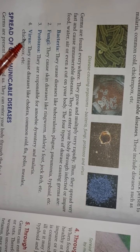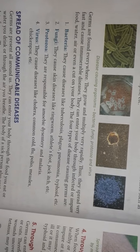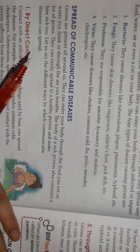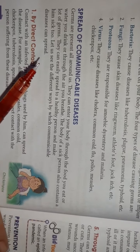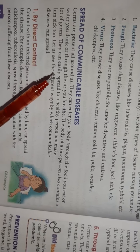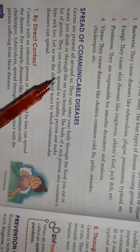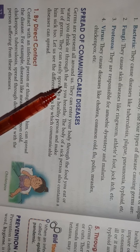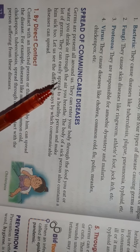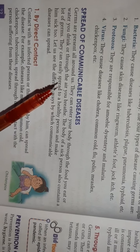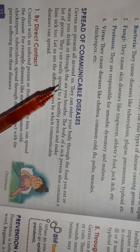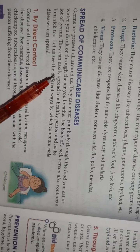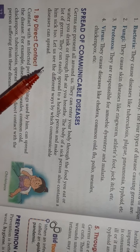Today we are going to discuss how these diseases spread from a sick person to a healthy person. Germs are present all around us and they can enter our body through our food, water, and air. When we come in contact with an infected person, we get infected.